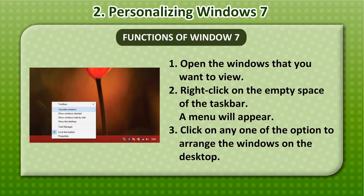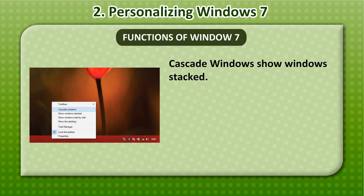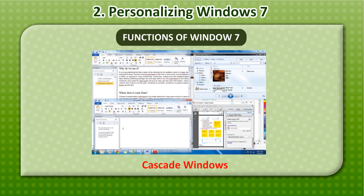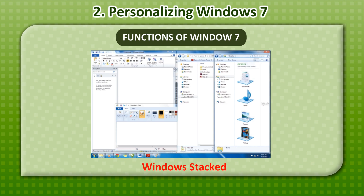1. Open the windows that you want to view. 2. Right-click on the empty space of the taskbar. A menu will appear. 3. Click on any one of the options to arrange the windows on the desktop. Options include Cascade windows and Show windows stacked.